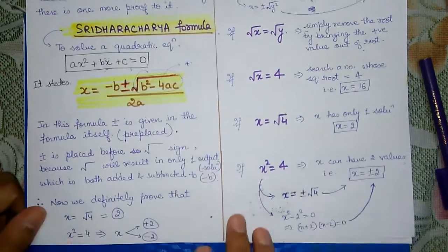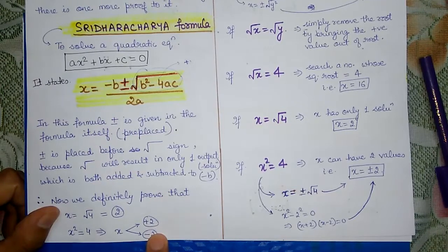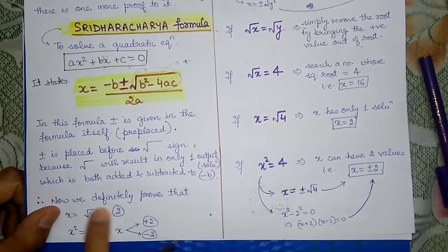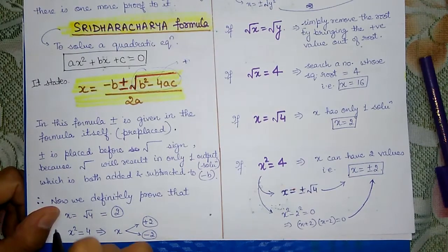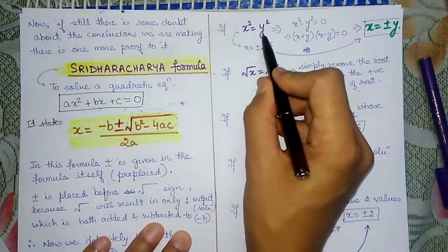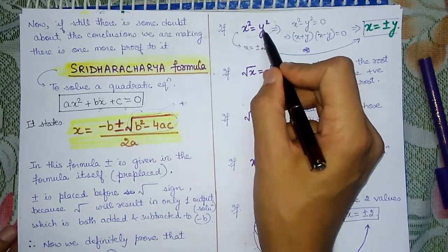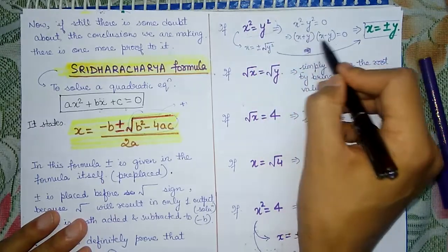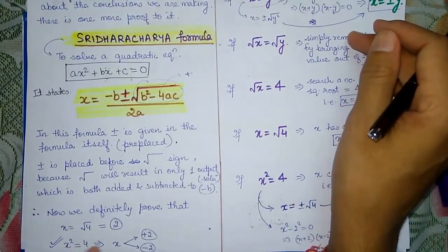This confirms that when solving root, we get only one value — not two. So when x equals root 4, the answer is 2. When asked what is the square root of 4, the answer is plus minus 2. When x squared equals 4, x is plus minus 2. If root 4 is given, the value is 2 only. x squared equals 4 gives x equals plus minus root 4, which gives plus minus 2.